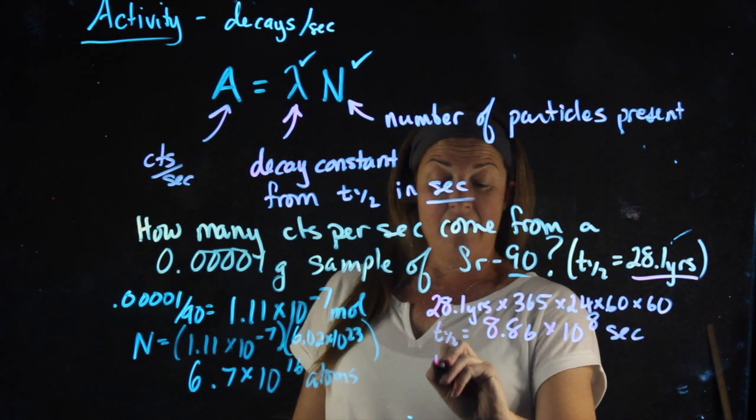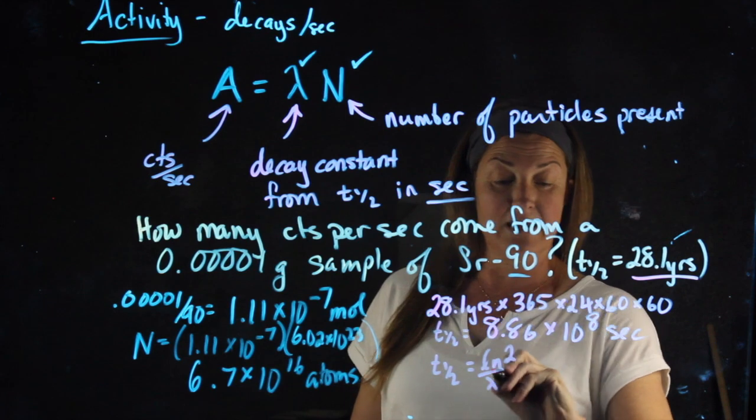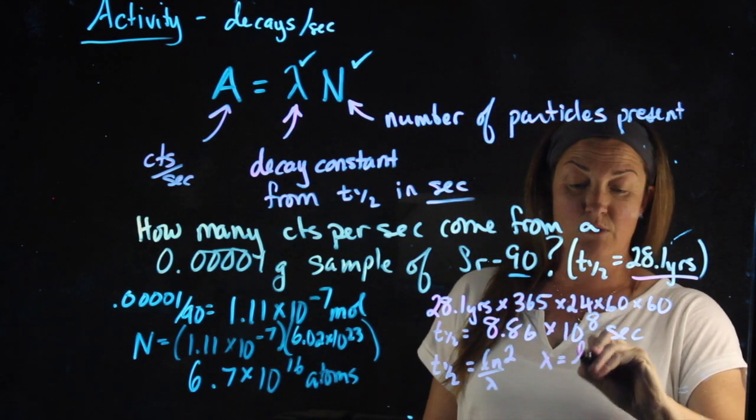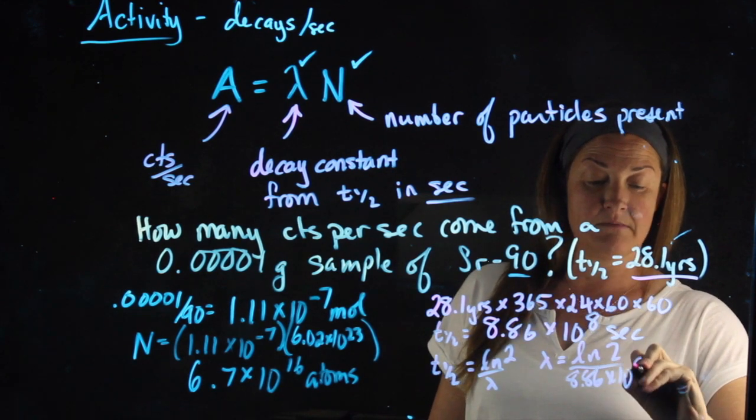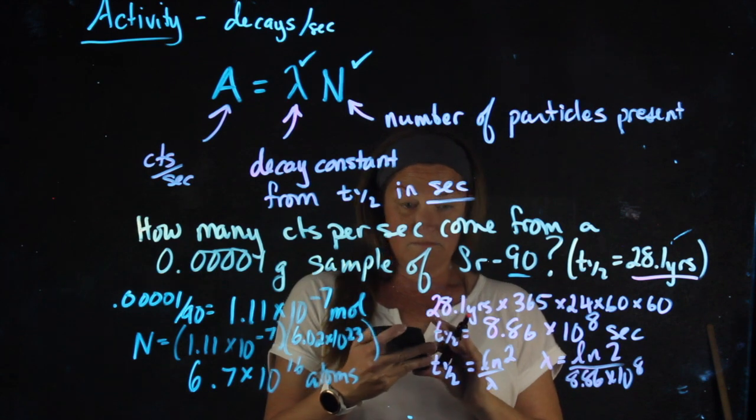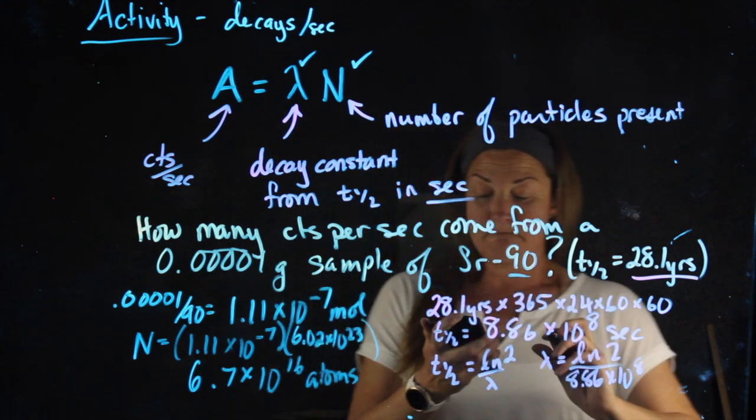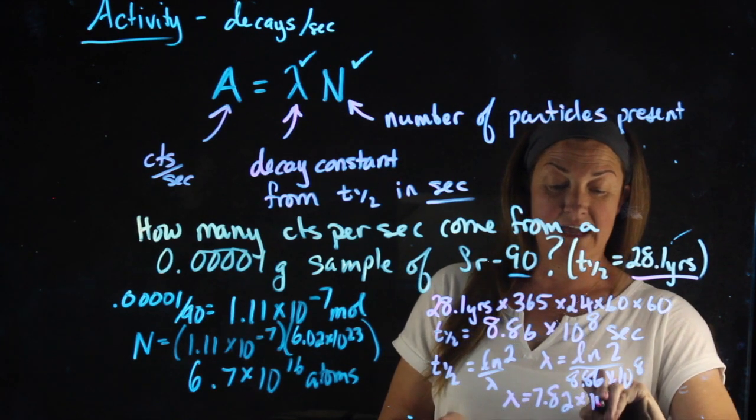T1/2 equals ln 2 over lambda. So lambda equals ln 2 over 8.86 times 10 to the 8th. Lambda equals 7.82 times 10 to the negative 10th.